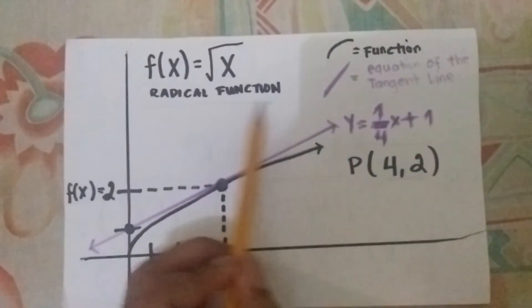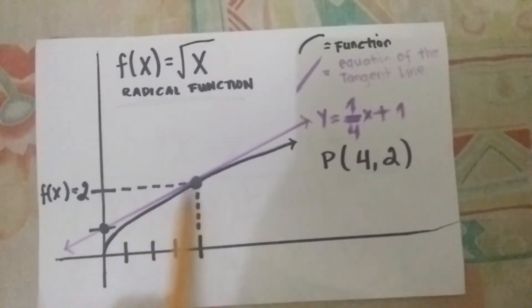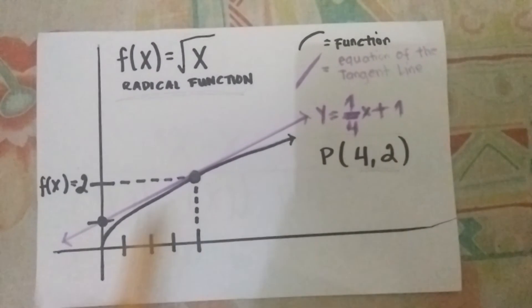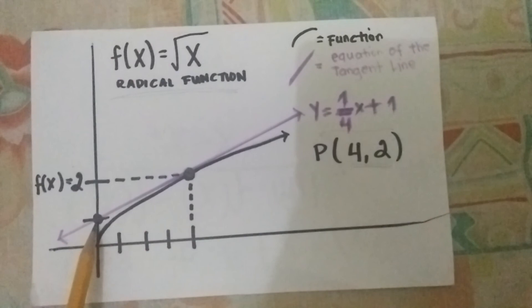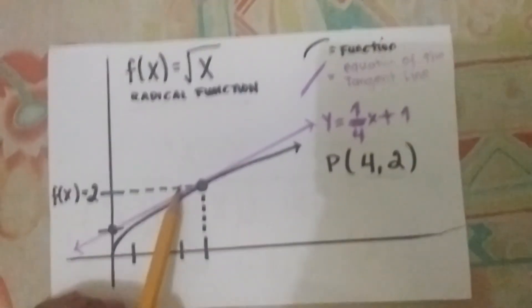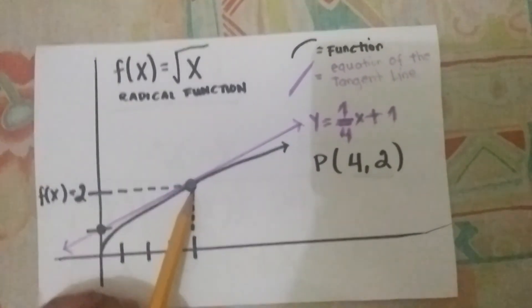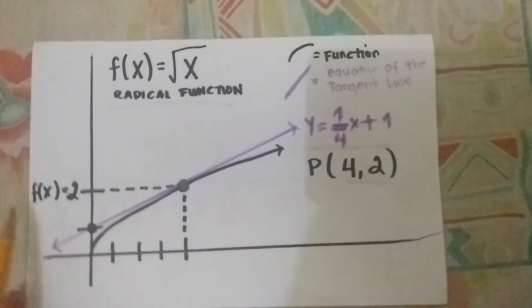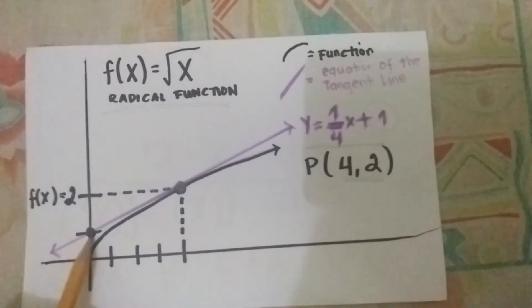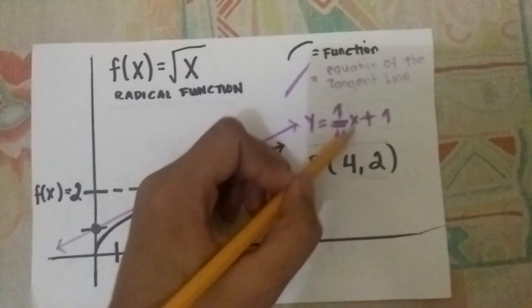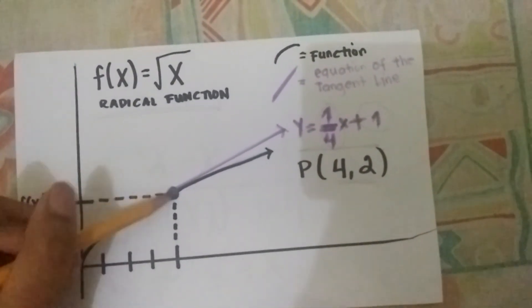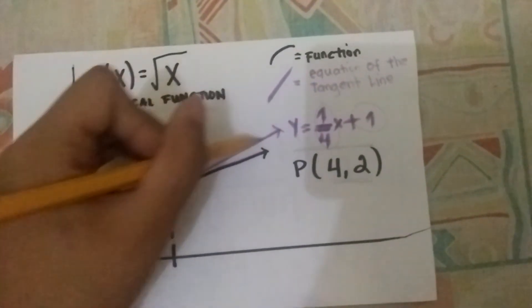For the graphical representation of the function f(x) equals square root of x, which is a radical function: according to Desmos, this will automatically look like a square root curve. Our goal is to form the tangent line. From the given point of tangency (4, 2), count x-coordinate to 4 and y-coordinate to 2, draw hidden lines meeting at that point — this serves as the point of tangency. For the tangent line y equals (1/4)x plus 1: the y-intercept is 1, and the slope is 1/4, representing rise over run — 1 rise, 4 run. This line serves as the equation of the tangent line.